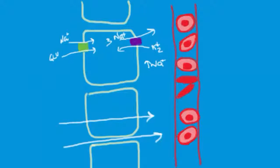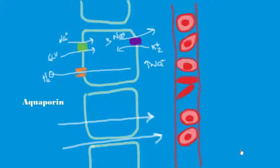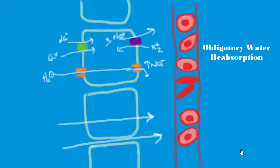Water is driven out of the tubules and into the peritubular capillaries by a strong osmotic gradient. A special channel protein specific for water, called the aquaporin, allows the relatively unopposed movement of water through the cell. The body is obliged to reabsorb water through this process because these aquaporins make the proximal convoluted tubule highly permeable to water. This is called obligatory water reabsorption.